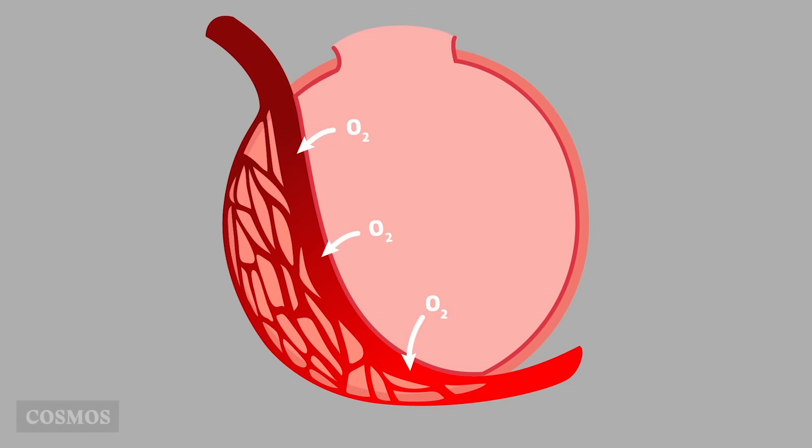Oxygen diffuses from the alveoli into the blood and carbon dioxide diffuses from the blood into the alveoli.